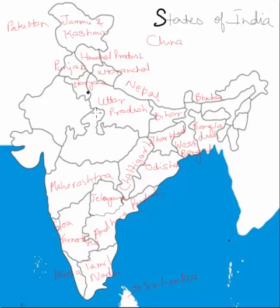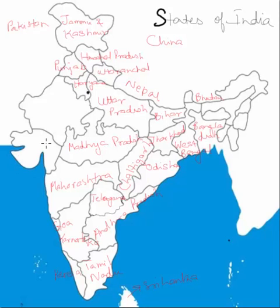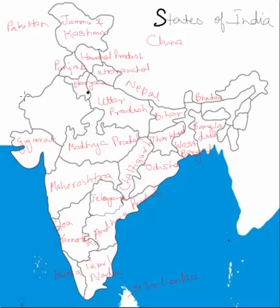We are now left with three states in this central area. The absolute central state is Madhya Pradesh — 'Madhya' in Hindi means central, which makes it easy to remember. One state borders Maharashtra on the southern side — that is Gujarat, the home state of Prime Minister Narendra Modi. The remaining large state that borders Punjab and Haryana to the north, Pakistan to the west, Gujarat to the south, and Madhya Pradesh to the southeast is Rajasthan.